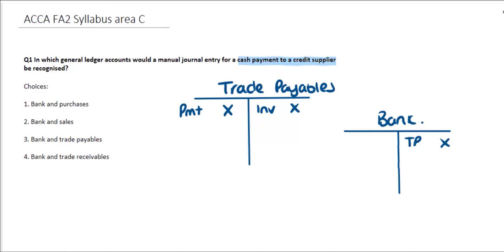Looking at the choices available, we can see that the third option — Bank and Trade Payables — is the correct answer.